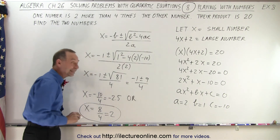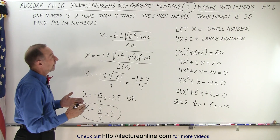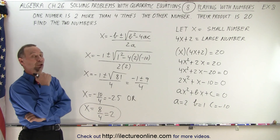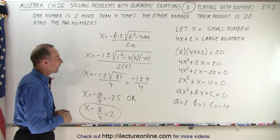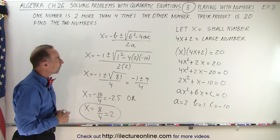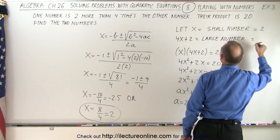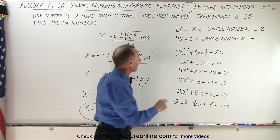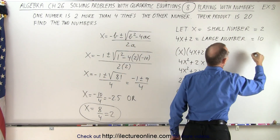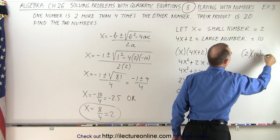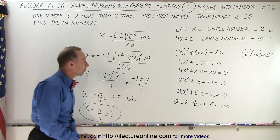The most likely answer is x = 2. Let's check: if x equals the small number, then the small number equals 2. And 4x + 2 gives us 4·2 + 2 = 10, the large number. Notice 2 times 10 is indeed 20, so those are the two correct numbers.